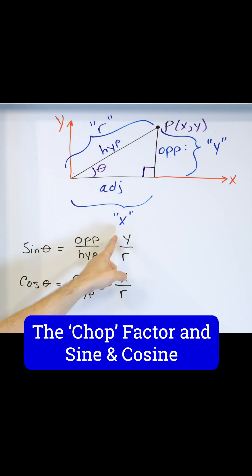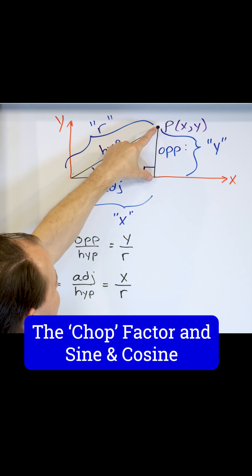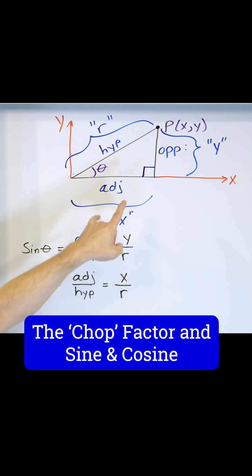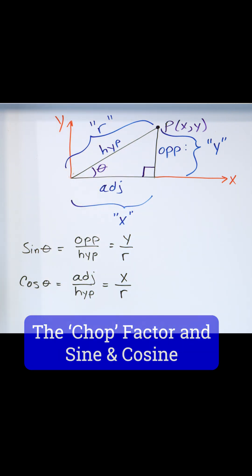When you see sine of an angle, it is the ratio of how much this triangle goes up compared to how much total length of the hypotenuse of the triangle there is.